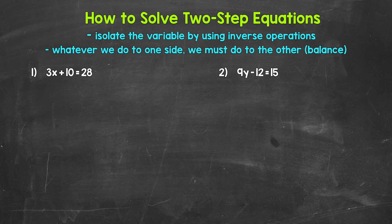When we solve two-step equations, we want to isolate the variable, just like when we solve one-step equations. So we want to get the variable by itself, and we do that by using inverse operations — opposite operations. We want to use inverse operations to undo the operations on the side of the equation with the variable, and this will isolate the variable.